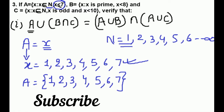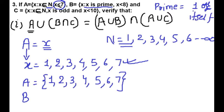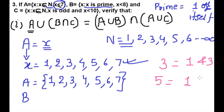Now come to Set B. Here B consists of prime numbers. Prime means divisible by 1 or itself only. For example, 3 is divisible by 1 and by itself 3 — no other number. Similarly, 5 is divisible by 1 and itself 5 — no other number. So these are prime numbers.